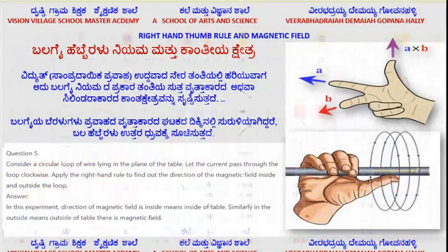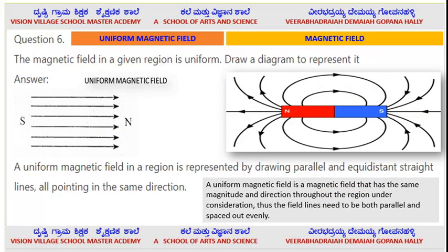Now coming to the uniform magnetic field. Question number six states: magnetic field in a given region is uniform — draw a diagram to represent it. This is a question asked in the board examination. What is the difference between lines of forces of the South Pole and the North Pole? The lines of force around the magnet are different, but from South Pole to North Pole, if the force of attraction and repulsion is there — that is different. That is the wonder of the magnet.